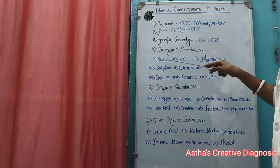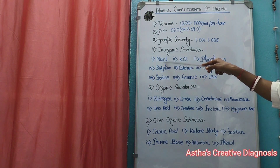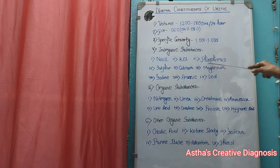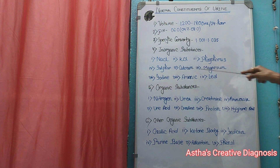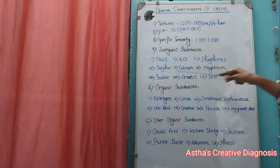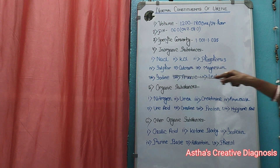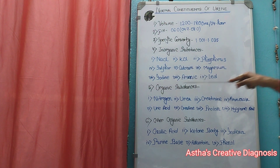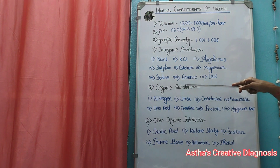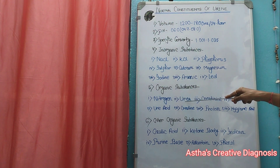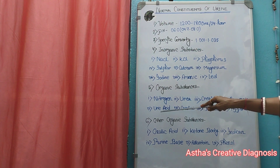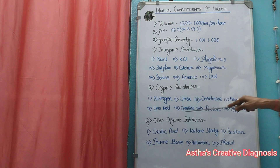Chemical constituents include sodium chloride, potassium chloride, phosphorus, sulfur, calcium, magnesium, iodine, and arsenic. Organic substances are characterized by nitrogen, urea, creatine, ammonia, uric acid, and protein.